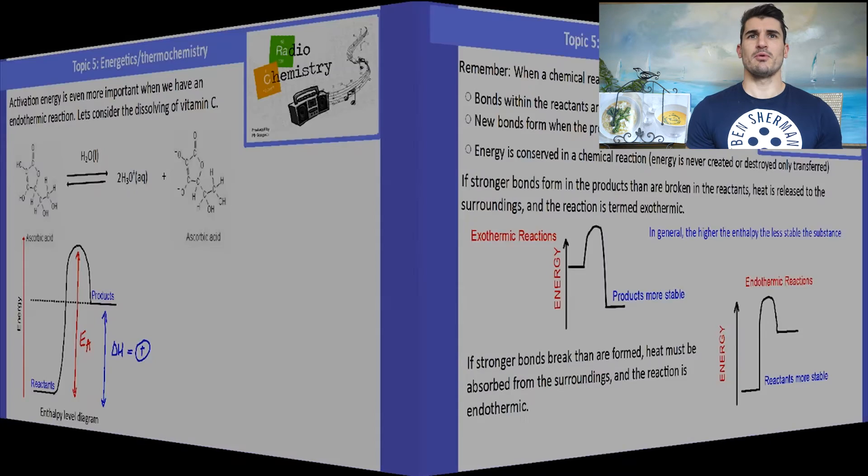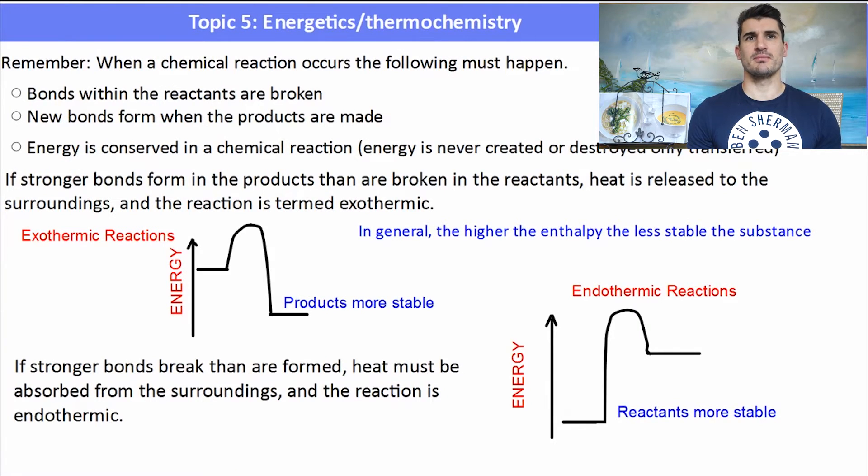So a couple of things to remember. When a chemical reaction occurs, the following must happen. Bonds within the reactants are broken. And that's an endothermic process, bond breaking endothermic. New bonds are formed when the products are made, that's an exothermic process. When new bonds form, it releases energy.